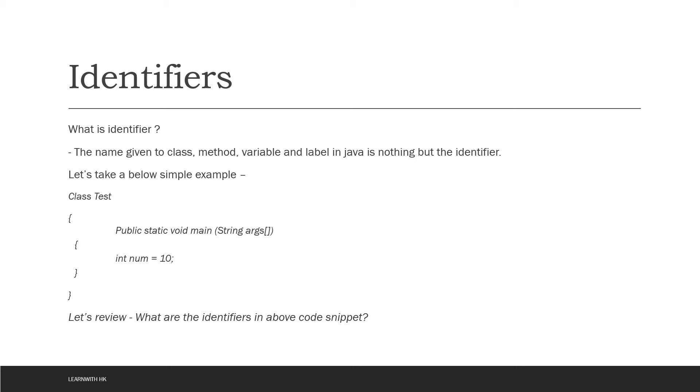To give an example in layman language, if you are sitting in a class and you need to identify any student, we have student names. So student name is nothing but the identifier like Ravi or Arjun, Akshay, whatever the name. It will identify that student.